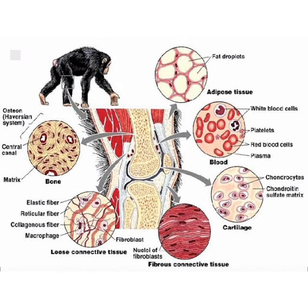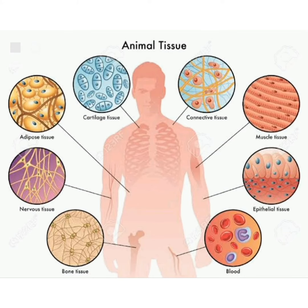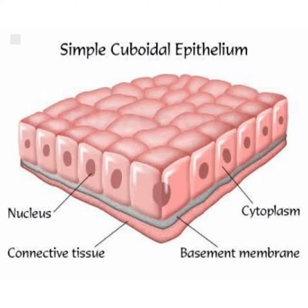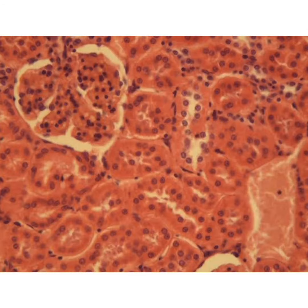Next, nervous tissues. Nervous tissue is found in the brain, spinal cord, and nerves. It is responsible for coordinating and controlling many body activities. It stimulates muscle contraction, creates an awareness of the environment, and plays a major role in emotions, memory, and reasoning.